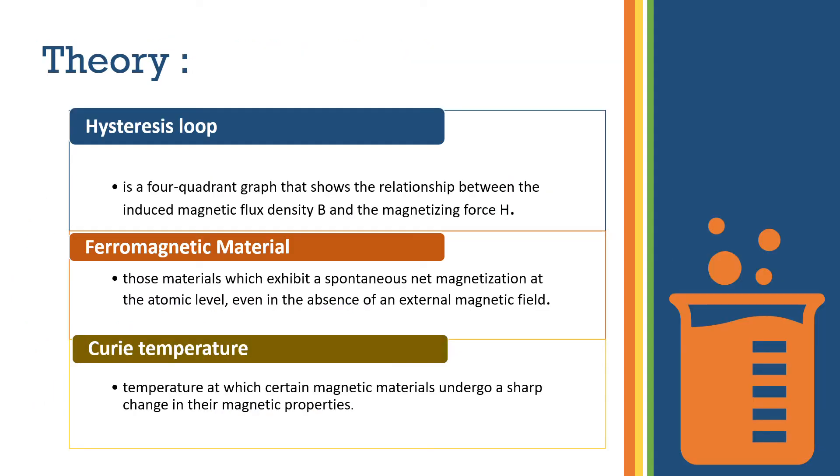Now the theory. To do this experiment we need to know what is a hysteresis loop. A hysteresis loop is a four-quadrant graph that shows the relationship between the induced magnetic flux density B and the magnetizing force H. It is also called the B-H loop, which is seen only in ferromagnetic substances.